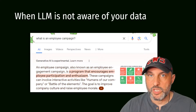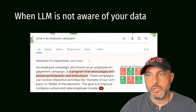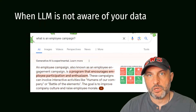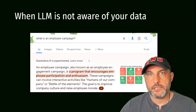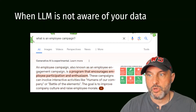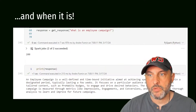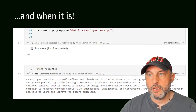Let's look at a specific scenario. At Prohabits, one of my companies, we work heavily with employee campaigns and have a lot of IP on how to run those campaigns efficiently. If I ask a generic LLM what an employee campaign is, I get a very generic answer. But if I ask the same question based on data from Prohabits, I get a much more detailed and relevant answer. A generic model says an employee campaign is 'a program that encourages employee participation and enthusiasm,' whereas with company data I get a far more specific response.